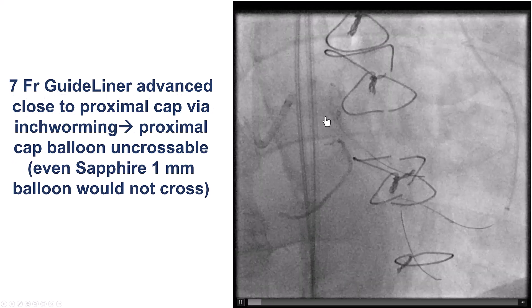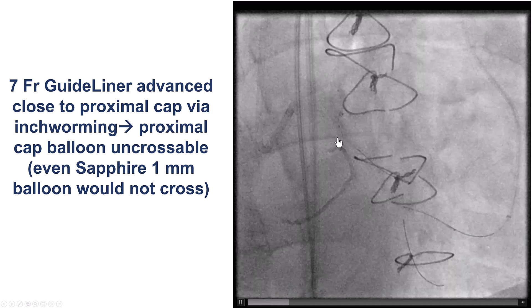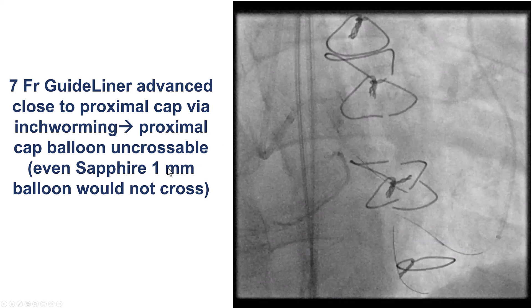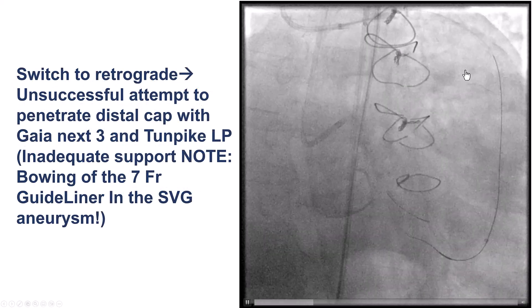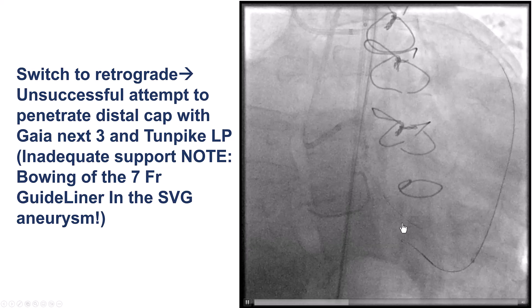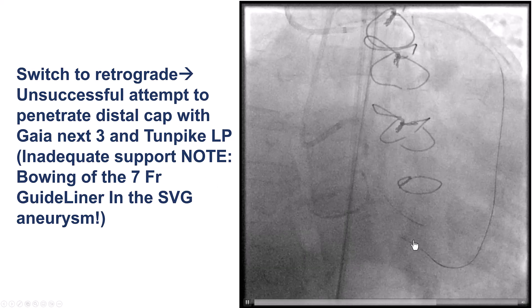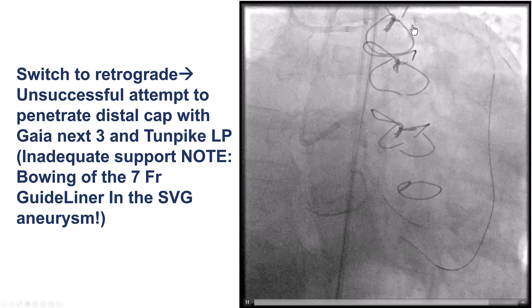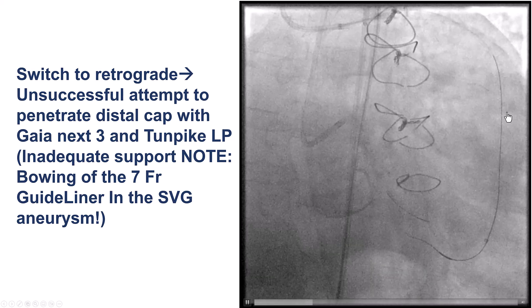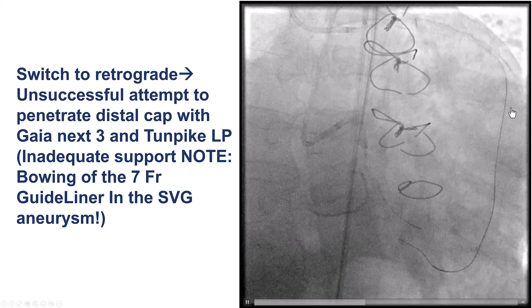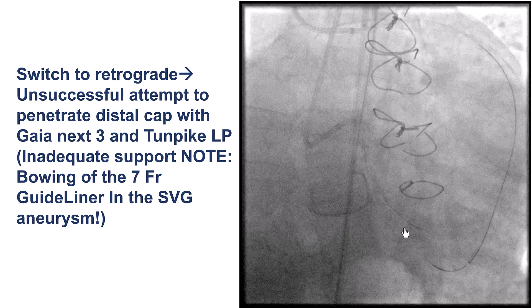We got a guide extension antegrade, but had a very hard time advancing equipment over the proximal cap. Even a 1.0mm Subfire Cross could not cross despite multiple attempts. We decided to go back to the retrograde, but had the same issue — advancing the retrograde guide wire was not possible because the support of the system was not there. The guide extension was bowing with forceful pushing and did not allow enough force for penetrating distally.